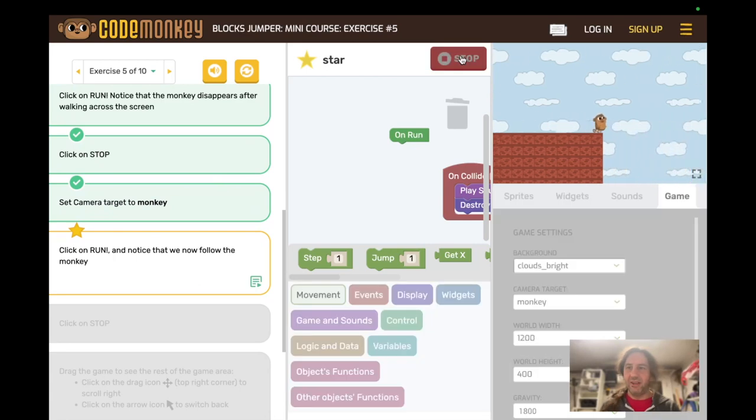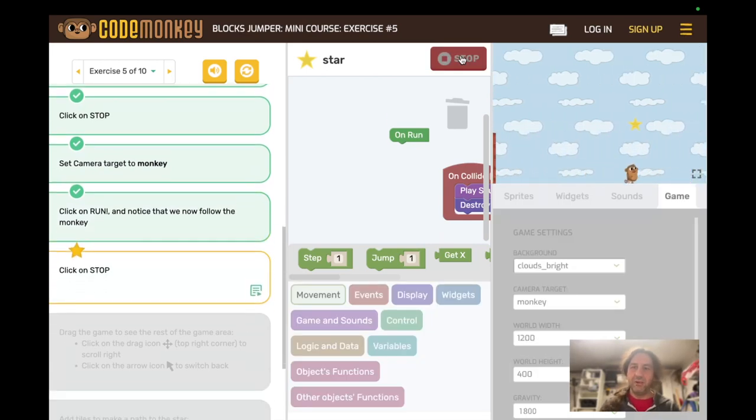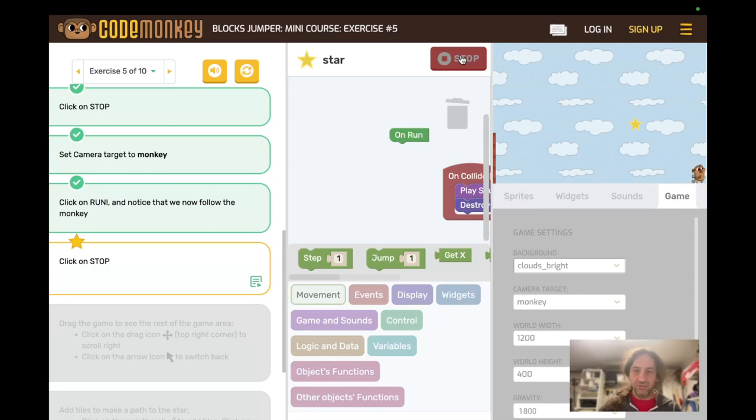And as we get off the screen we follow the monkey. Note the monkey's walking on the ground. It doesn't just fall and disappear. And now we click on stop.